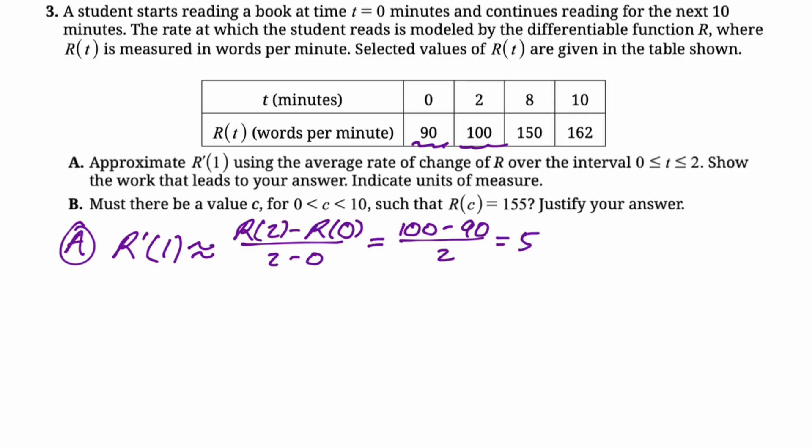Now for units, it's going to be the units of r of t divided by the units of t. So it's going to be words per minute per minute. It's not wrong to write words per minute squared, I just think it's easier to interpret the meaning of words per minute per minute versus words per minute squared. So I always write words per minute per minute.